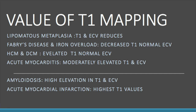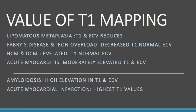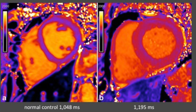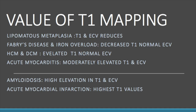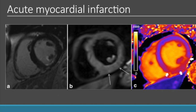The conditions affecting T1 mapping and ECV values in clinical practice include: lipomatous metaplasia, which shows severe reduction in T1 values and ECV; Fabry's disease and iron overload, which show a drop in T1 values but normal extracellular volume; HCM and DCM, with mildly elevated T1 values and near-normal ECV; acute myocarditis, with moderate elevation of T1 values and ECV. The highest increase in T1 values and extracellular volumes is seen in amyloidosis, while the absolute highest T1 mapping values are seen in acute myocardial infarction.